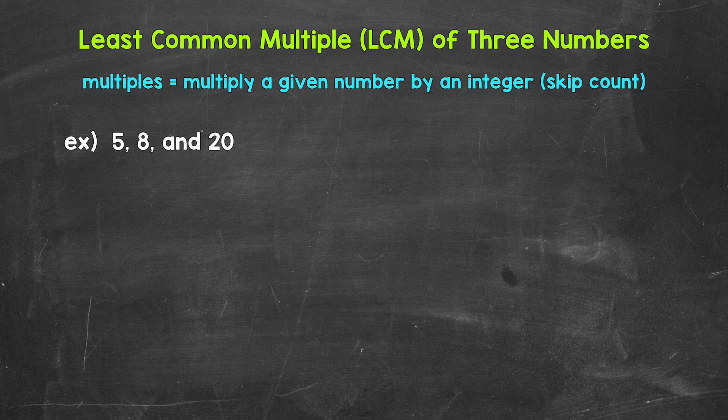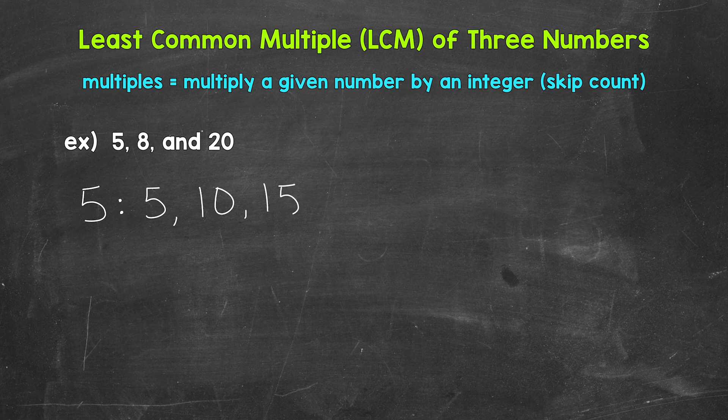This will make a lot more sense as we go through our example. Let's jump into our example where we have 5, 8, and 20. So let's find the least common multiple between these three numbers. Let's start with some multiples of 5. So 5 times 1 is 5, 5 times 2 is 10, 5 times 3 is 15, 5 times 4 is 20, and 5 times 5 is 25. So you can see that we just skip counted by 5 to list those multiples of 5.